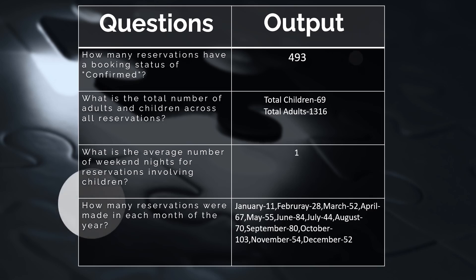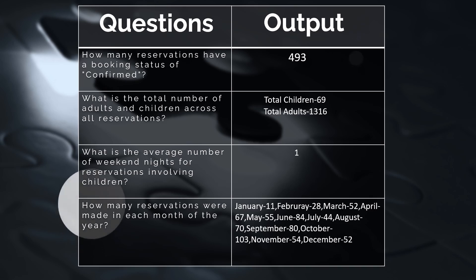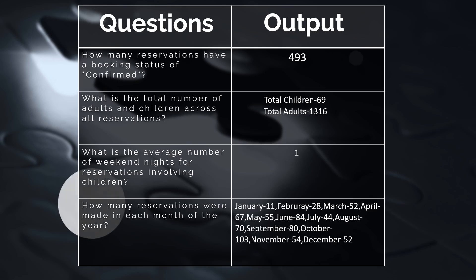Continuing the monthly breakdown — May: 55, June: 84, July: 44, August: 70, September: 80, October: 103, November: 54, December: 52.